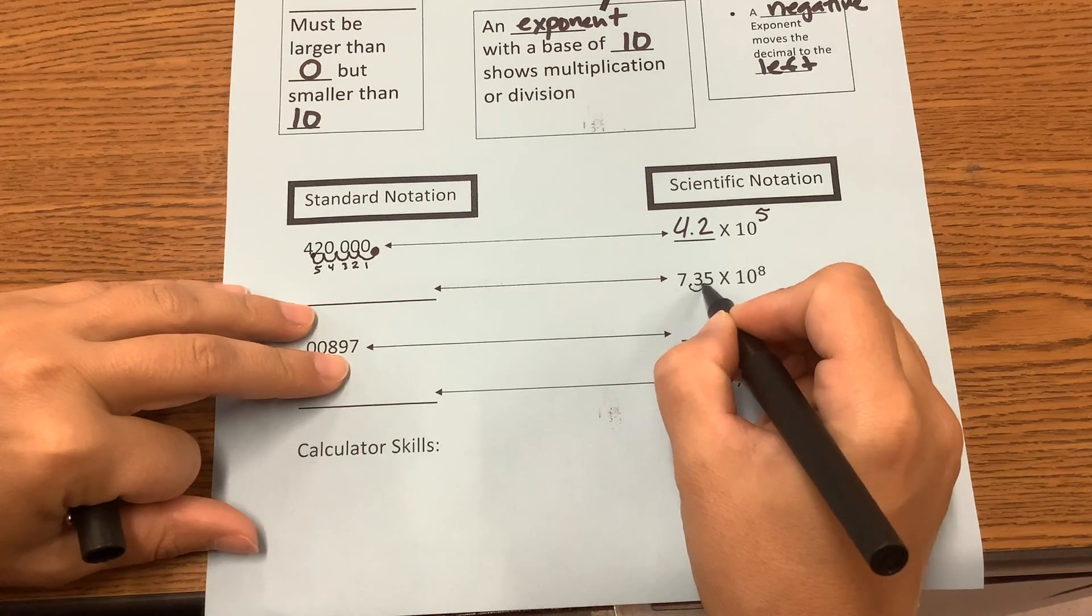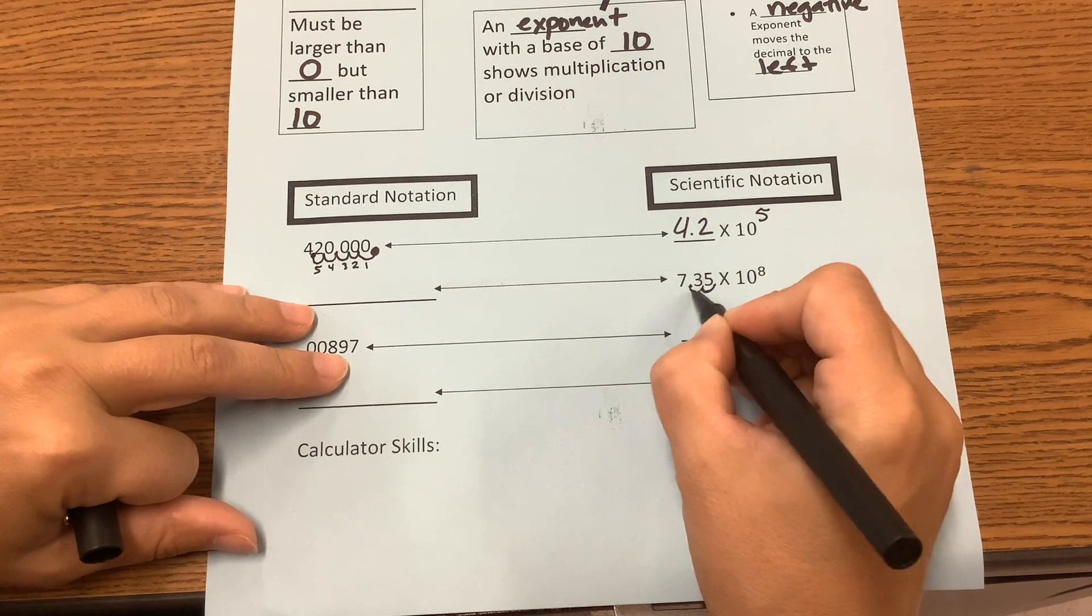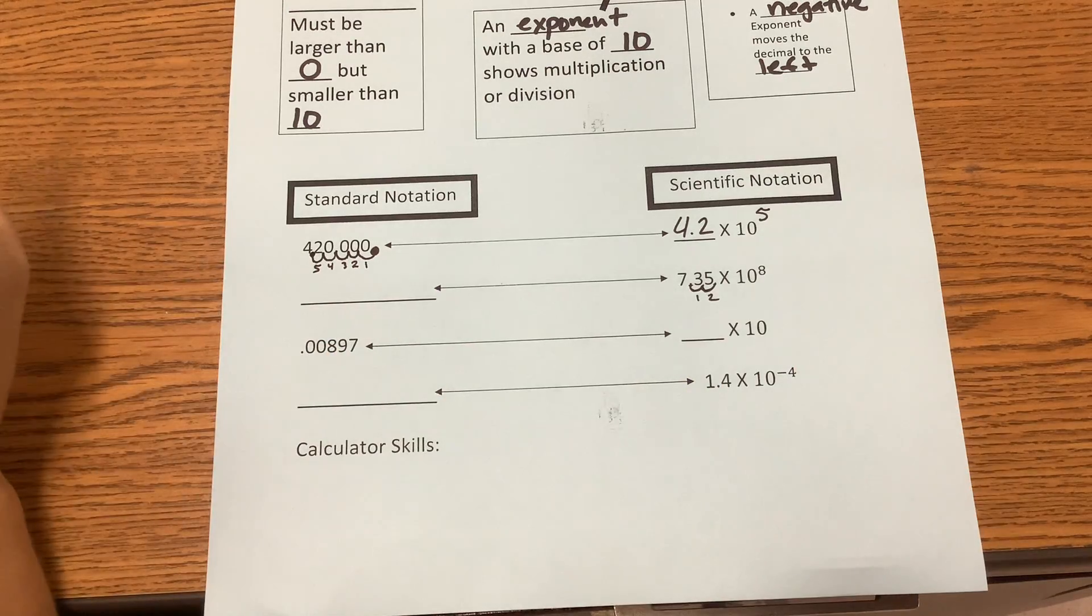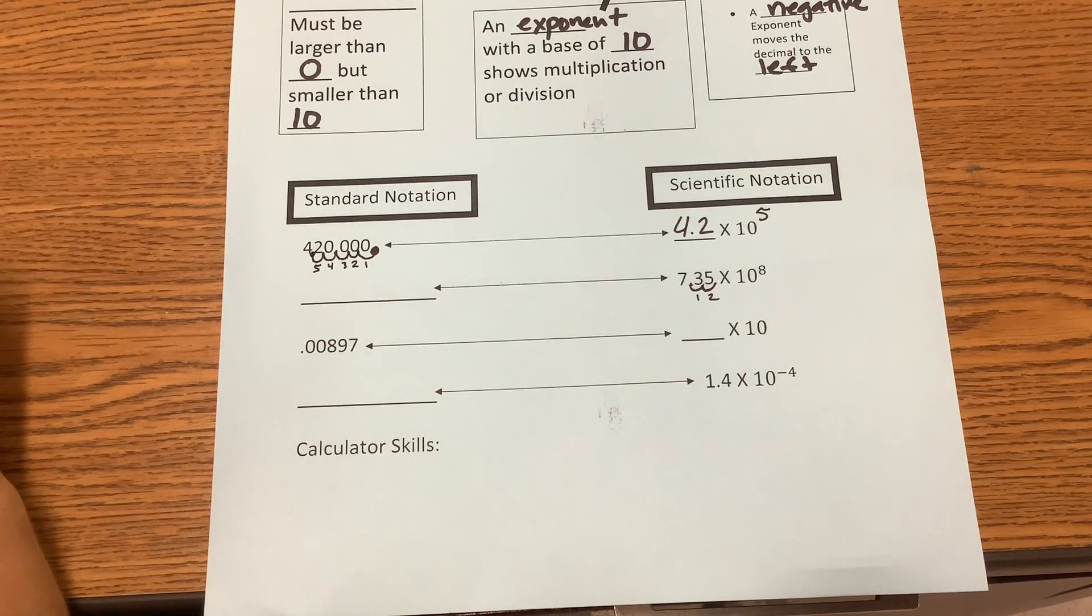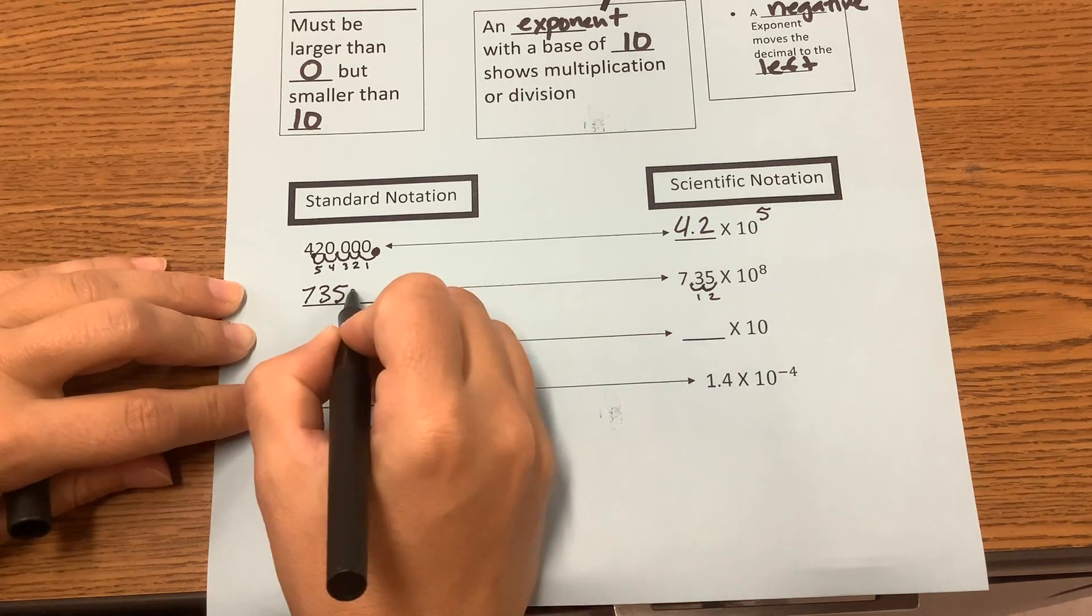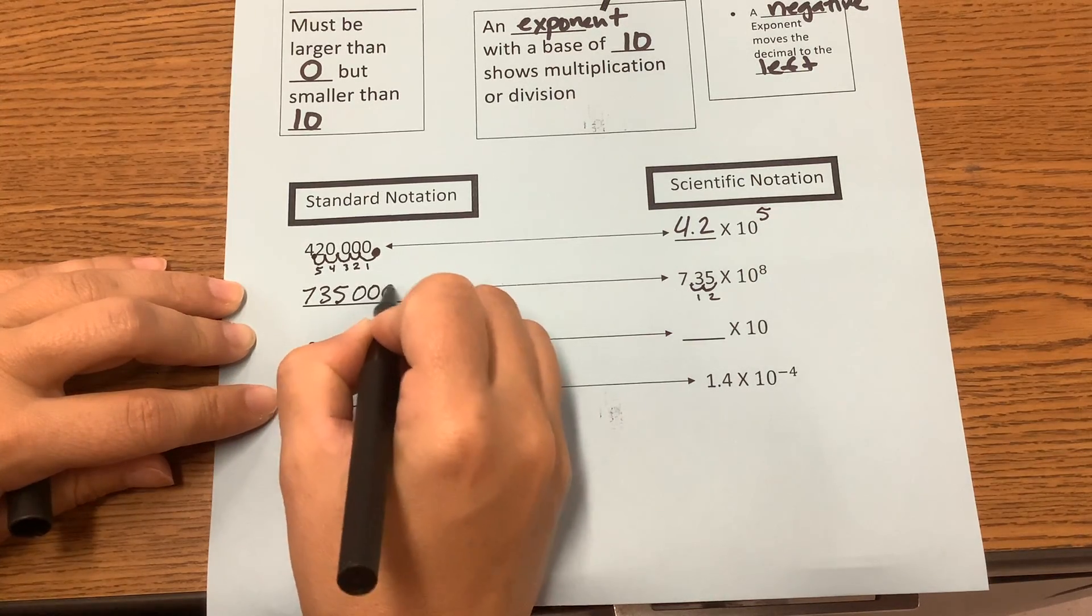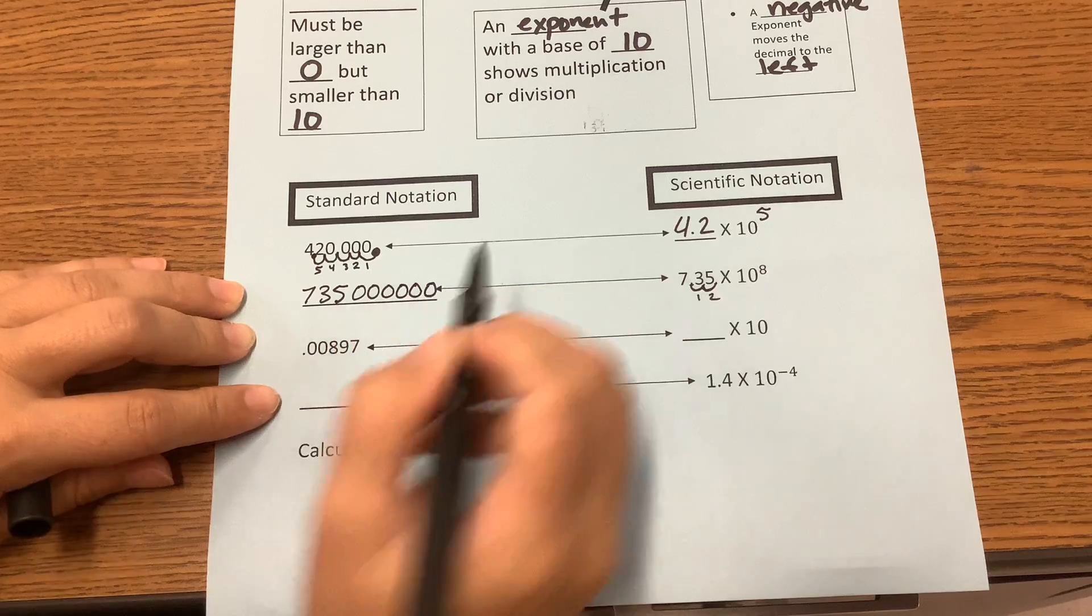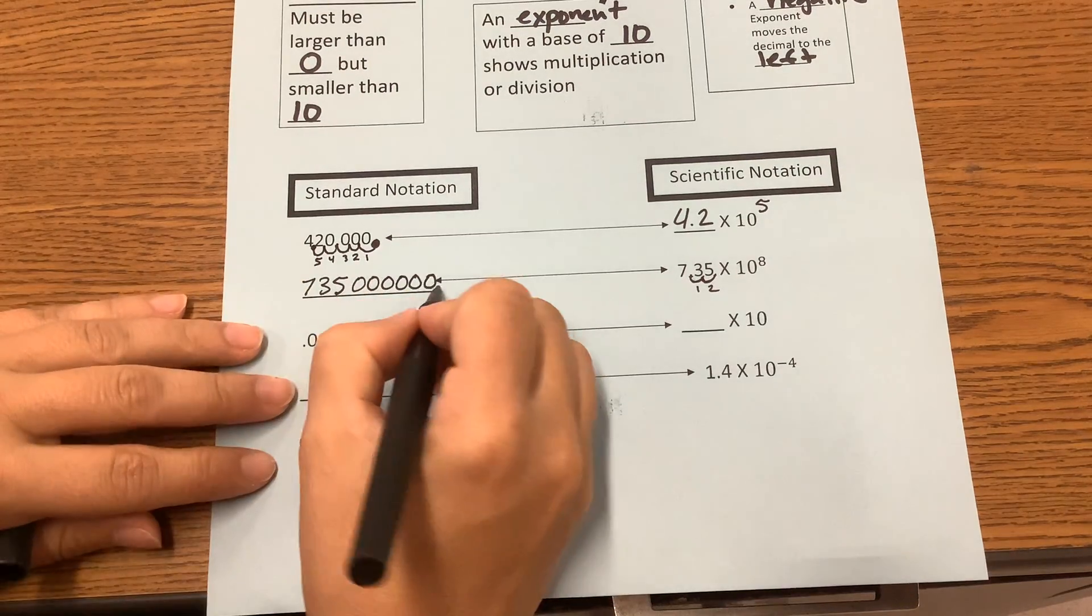How many places? We have 2 accounted for. That's just 2. So how many zeros do I need to put on the end of that? So 7, 3, 5, and then 6 zeros. 1, 2, 3, 4, 5, 6. That means the decimal is all the way back here now.